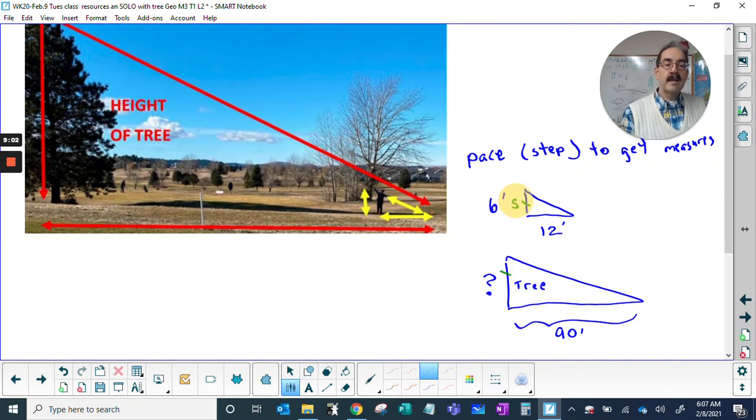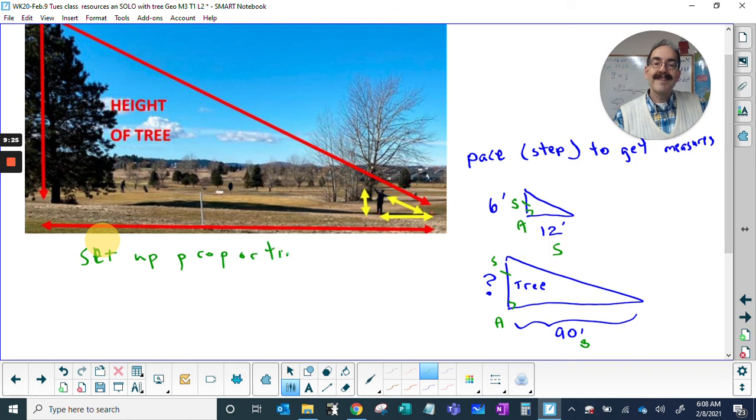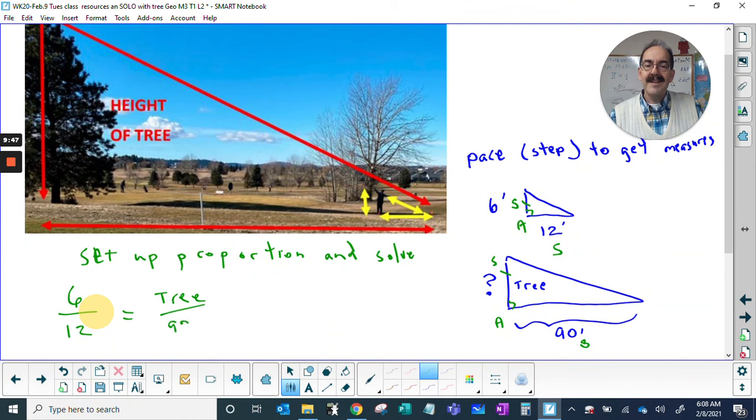So, side, 90 degrees, 90 degrees, angle, side. Now set up the proportion and solve. Six to twelve is the same as the tree to ninety. Cross multiply: twelve times the tree is equal to six times ninety.